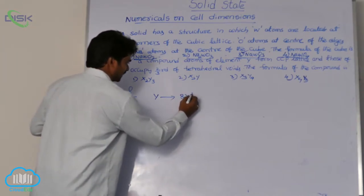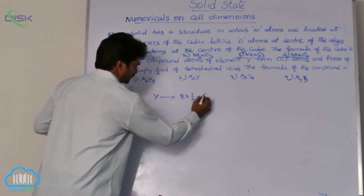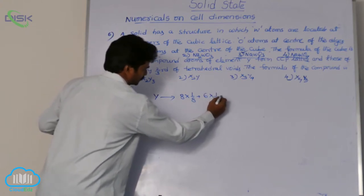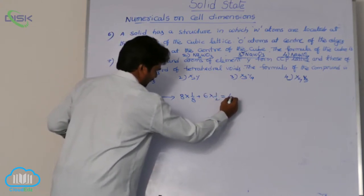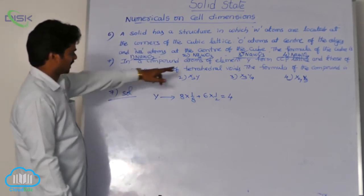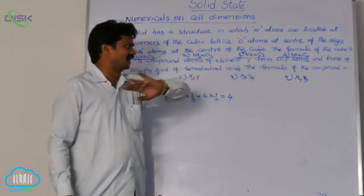From eight corners: 8×1/8=1. From six face centers: 6×1/2=3. So the total effective number of Y atoms is 4, because atoms of Y form CCP lattice.